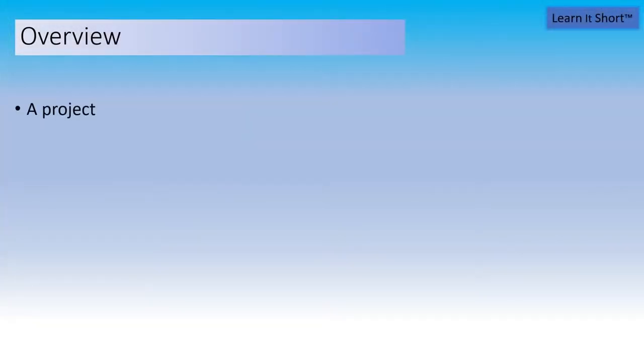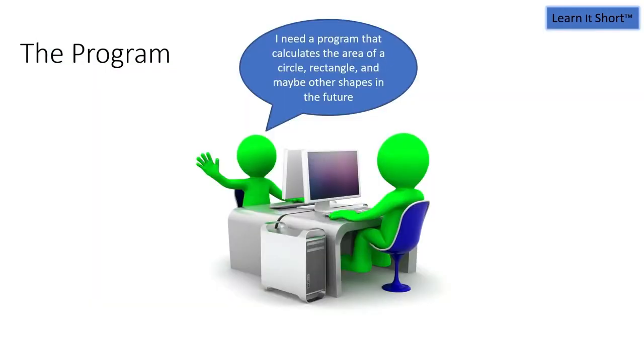All right, in this lesson we're going to look at a sample project that we'll be implementing for a customer. From that project, those requirements, we're going to make a plan, always make a plan no matter how simple or complicated. We need to do a little bit of design work so that we have a feel for what we're doing. In order to implement this application, we need to learn about conditionals as well as loops in C++. All right, so what's this project? The customer says they need a program that's going to calculate the area of circles, rectangles, and probably in the future some additional shapes.